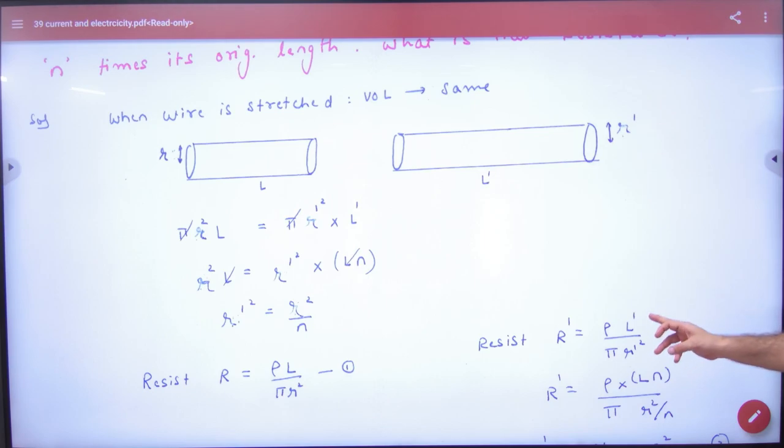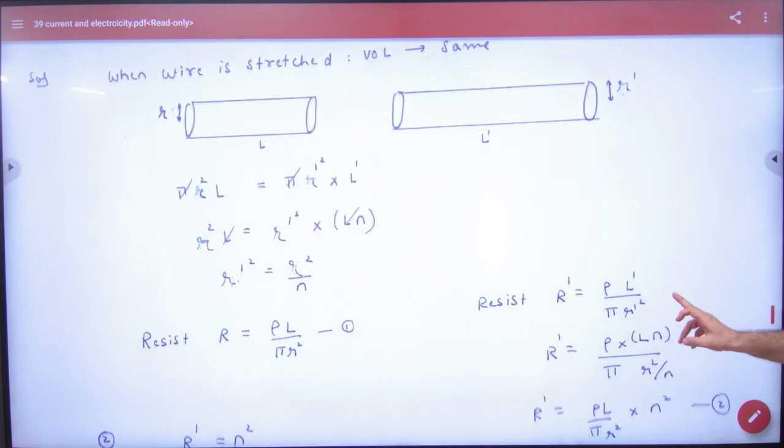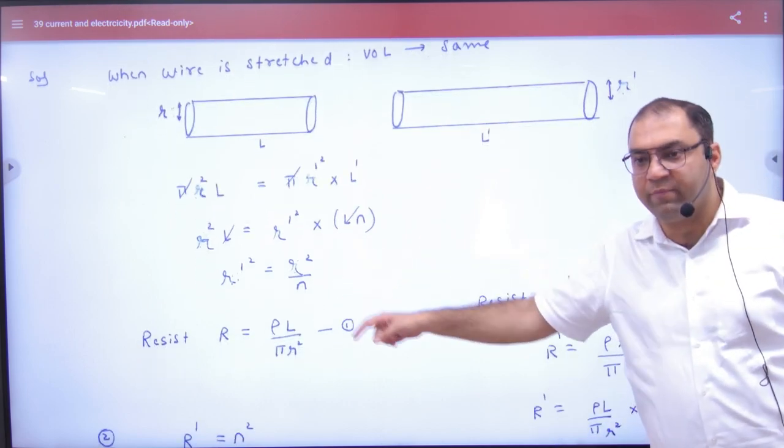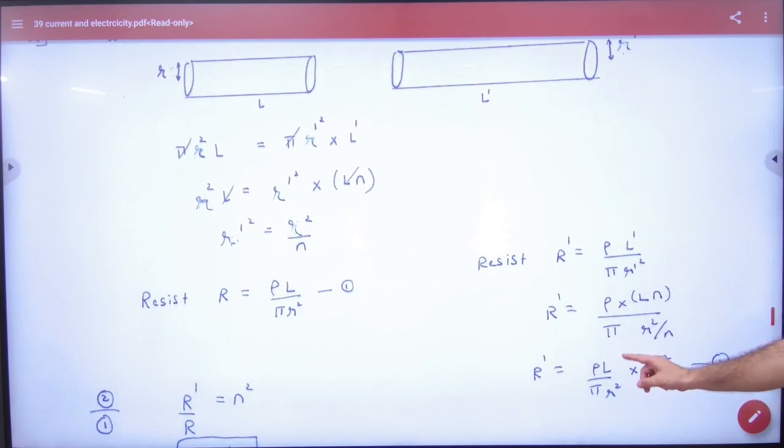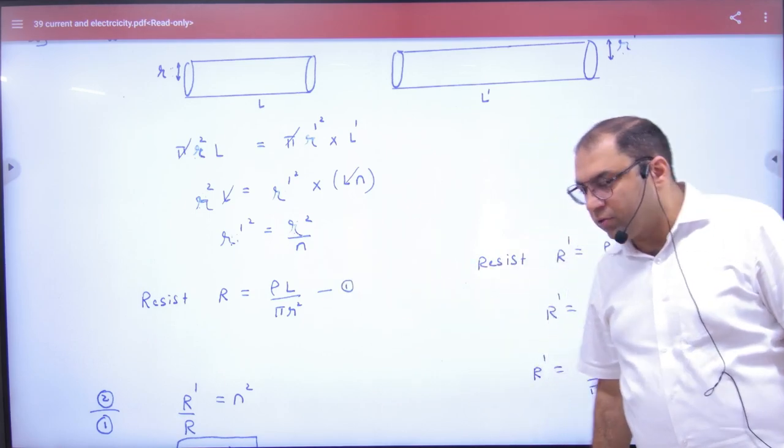The length has changed. How much is the length? L' is n times L. And what is R'²? R²/n. If we go up above, what is n²? What is ρL/πR²? But ρL/πR² is capital R. What is R'? N² into capital R.